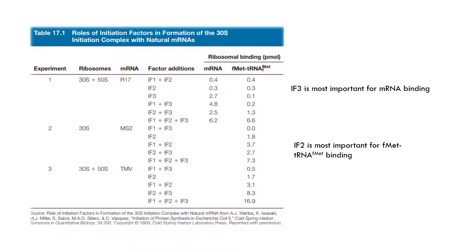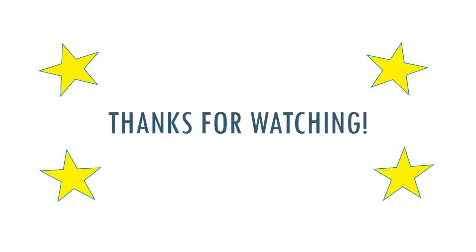So the data from Table 17.1 gives two main results. The first experiment shows that IF3 is the most important initiation factor for mRNA binding to the 30S ribosome. The second two experiments show that IF2 is the most important initiation factor for FMET-tRNA-FMET binding. I hope that this video has been helpful in your understanding of prokaryotic initiation factors. Thank you so much for watching, and remember, Go Blue!